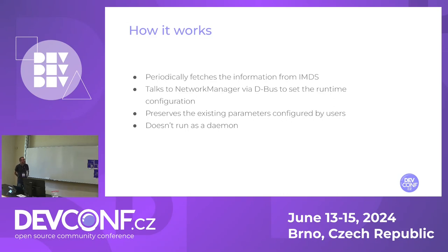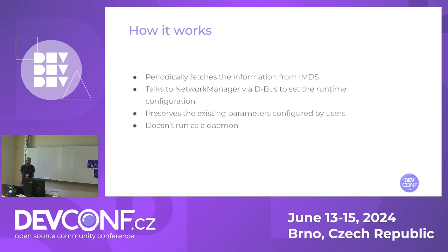How does it work? NM Cloud Setup periodically fetches information from the IMDS, and then talks to Network Manager via D-Bus to set the runtime configuration of interfaces. While doing so, it also preserves existing parameters set by users, such as additional IP addresses and routes. Since there is no asynchronous notification mechanism from the IMDS, detecting a change in the metadata requires polling. For this reason, NM Cloud Setup doesn't need to run as a daemon, but instead it's a one-shot configuration tool that is restarted periodically by a systemd timer.